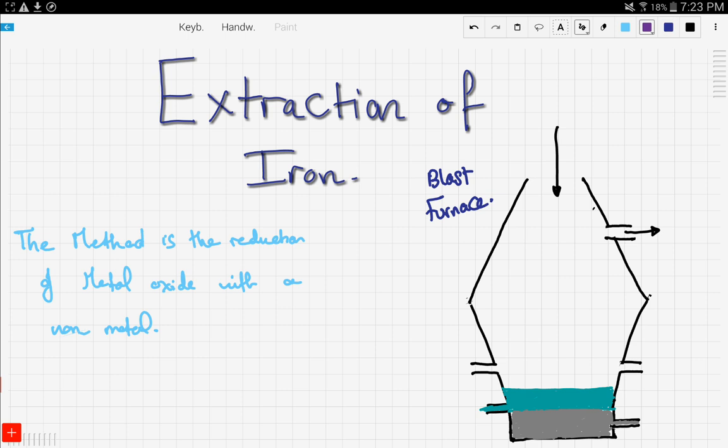Iron is extracted from the ore called hematite, which is iron three oxide (Fe₂O₃), and also it can be extracted from magnetite, which is Fe₃O₄. These two ores contain 60% iron.